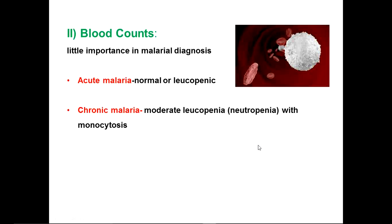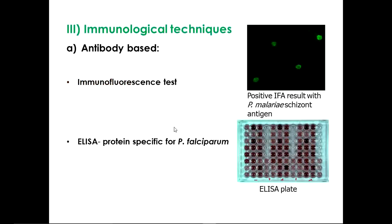Blood counts are not of diagnostic value but may give some clues. The WBC count can be low or normal in acute malaria, or moderately low in chronic malaria, and there can be monocytosis along with it.